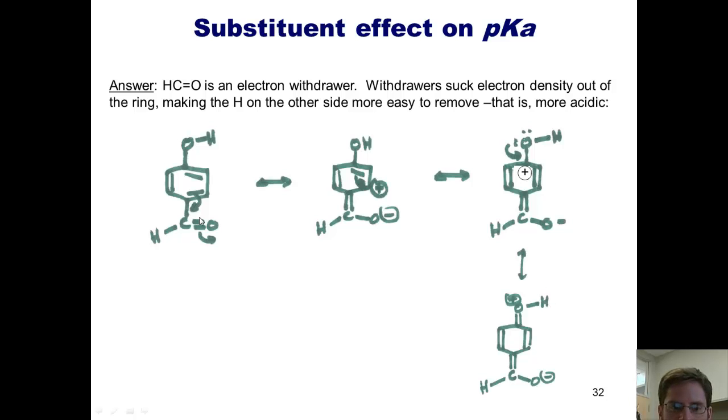So what's the bottom line? Having an electron withdrawer on one side of the ring will weaken the OH bond on the other side of the ring, making the H more acidic.